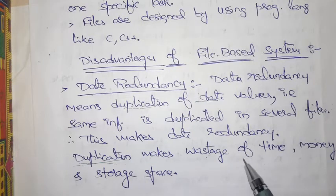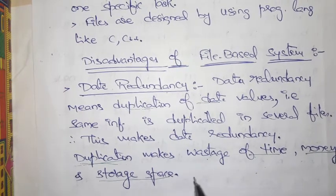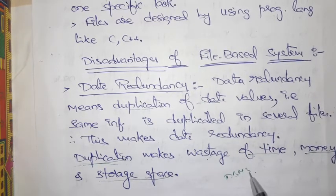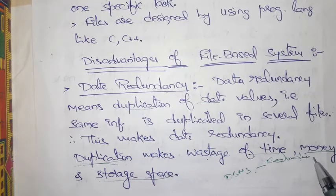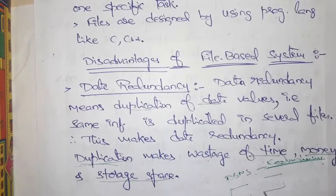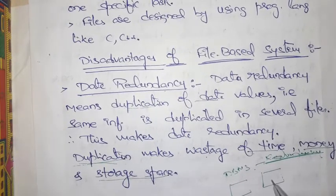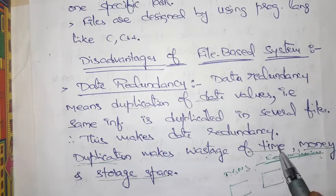If you maintain redundancy — that is, duplication — it means wastage of time, wastage of money, and wastage of storage space. So in a file-based system, the main drawback is redundancy, which is duplication of data appearing in multiple files.